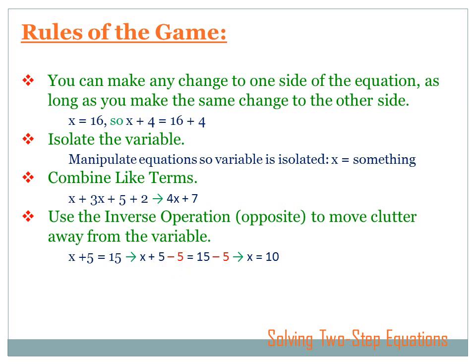I subtract 5. So now I've got x plus 5 minus 5 equals 15. But if I subtracted 5 from the left side, I've got to subtract 5 from the right side. Now, in the next step, the two 5's cancel each other out and leave just an x. And the 15 minus 5 goes down to 10.